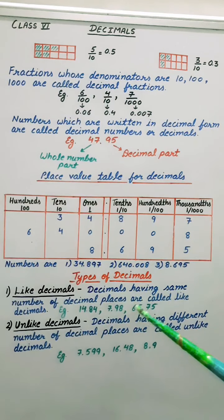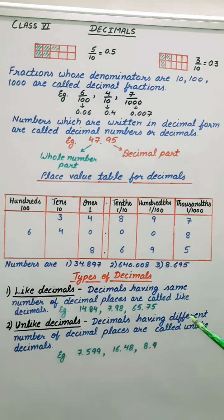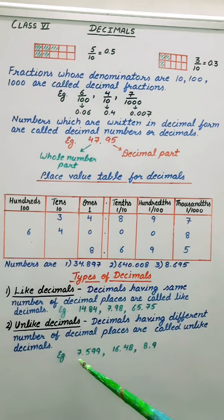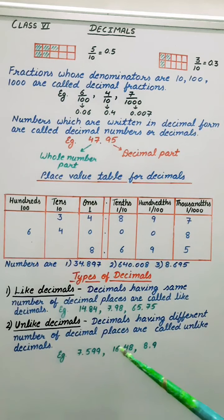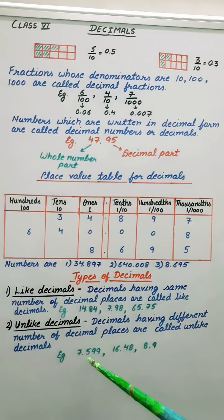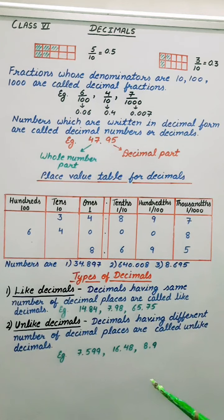Now let's see unlike decimals. Decimals having different number of decimal places are called unlike decimals. So here after the decimal 3 digits, here after the decimal 2 digits and here 1 digit. So number of decimal places are different. That's why they are unlike decimals.